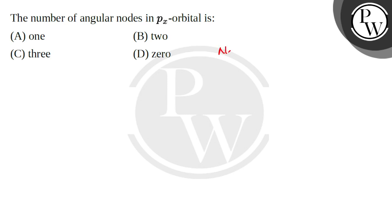So we have two types of nodes. One is the radial node which depends on the distance and radius, and one is the angular node which depends on the orientation.